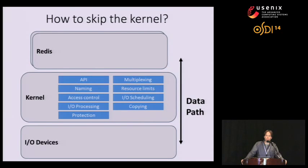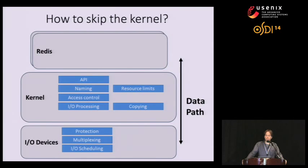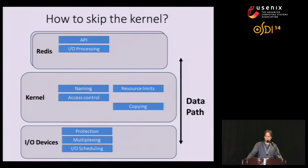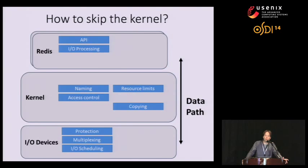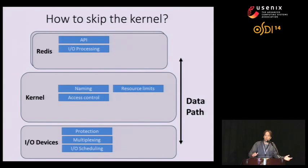With that in mind, it becomes fairly straightforward to skip the OS kernel in the common case. We move protection, multiplexing, and I/O scheduling down into hardware, where that functionality is already provided. This allows us to move the API and all I/O processing up into applications, linked in as a library. And because I/O devices now operate directly on application virtual memory, we can eliminate the copying that Linux traditionally does for protection, and provide a zero-copy I/O stack.